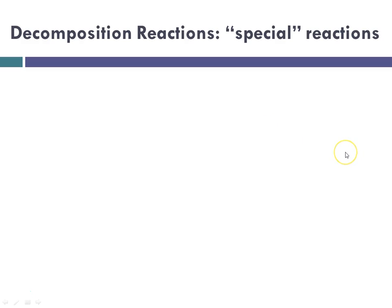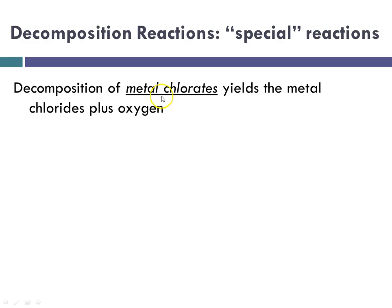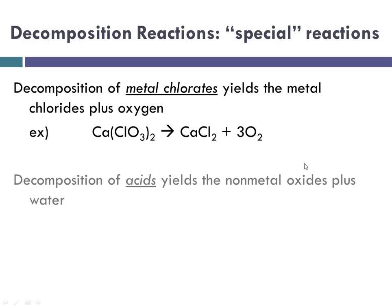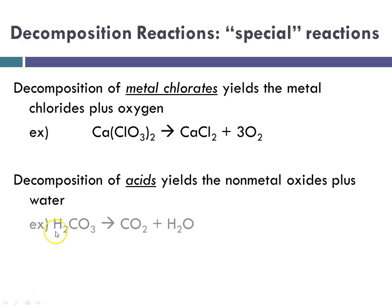More special decomposition reactions: the decomposition of metal chlorates yields the metal chloride plus oxygen. Here, the decomposition of calcium chlorate produces calcium chloride and oxygen. The decomposition of acids yields the non-metal oxide plus water. In this case, carbonic acid will decompose to produce carbon dioxide and water.